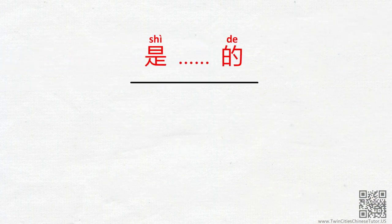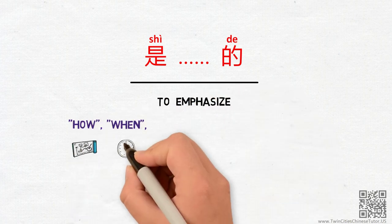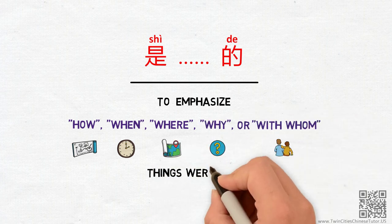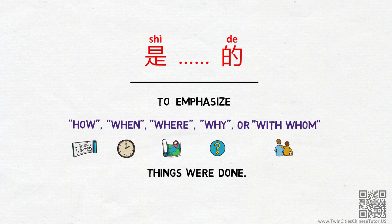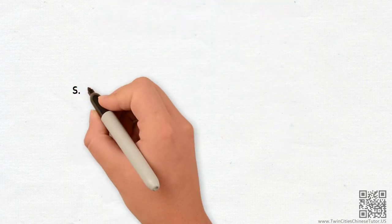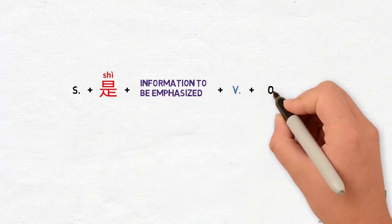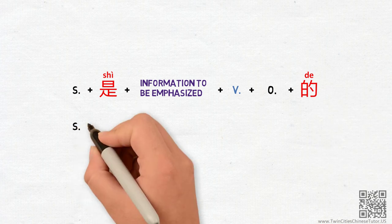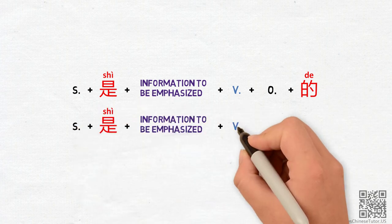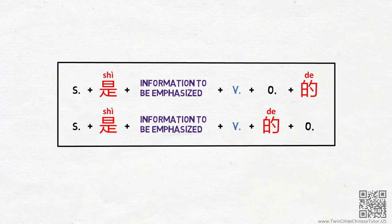When we use the 是的 pattern, it allows us to emphasize how, when, where, why, or with whom things were done in the past. The pattern goes: Subject + 是 + information to be emphasized + Verb + Object + 的. By using this pattern, the marker 了 is no longer needed.